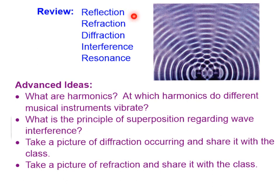Just to recap: reflection, refraction, diffraction, interference, and resonance. Be able to know what each one is, how they're similar, and how they're different. Some advanced ideas to consider: how fast does light travel in mediums besides air and water, and how does that affect its angle of refraction? I look forward to seeing what you come up with, and we'll see you in class.